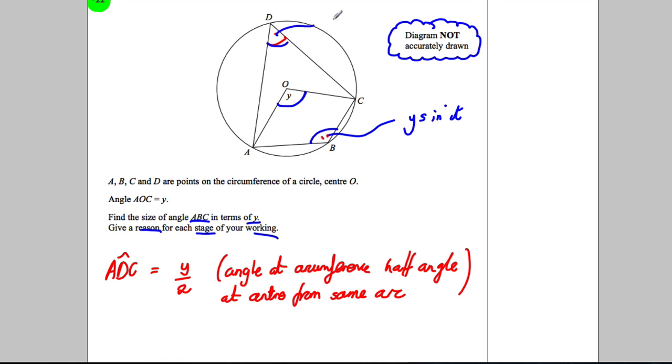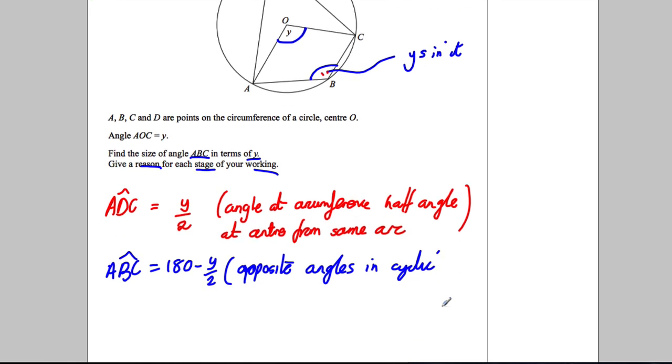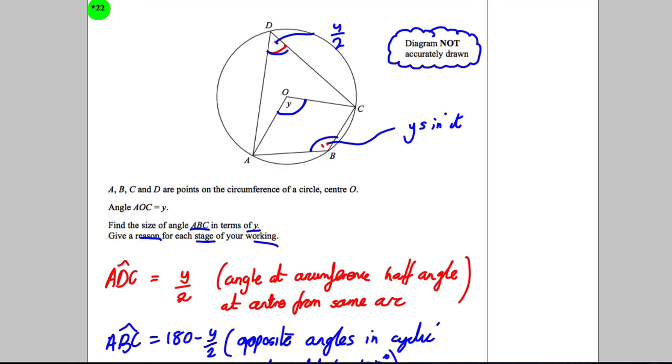So the angle we're looking for, namely ABC, must be equal to 180 subtract y over 2. The rule for this one is that opposite angles in a cyclic quadrilateral add to 180. And there we go, that's everything we need for this question and those four marks.